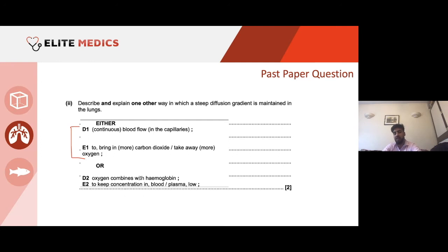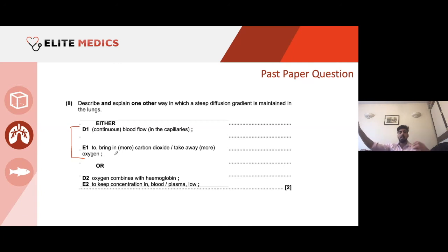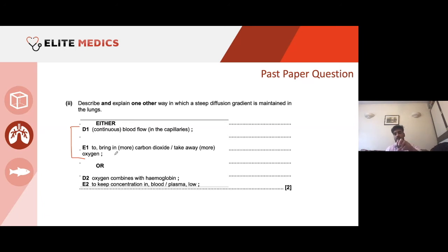The best answer is: continuous flow of blood instantly takes oxygenated blood away and brings more deoxygenated blood to the alveolus, enabling gas exchange — oxygen comes into the blood, then it's taken away. It's an ongoing system.